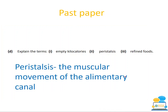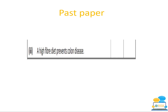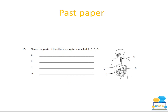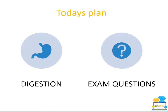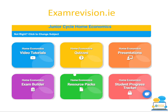More past paper examples: define peristalsis — the muscular movement of the alimentary canal. True or false: high fiber prevents colon disease — true. From an older junior cert paper, a labeling question shows: B is the stomach, C is the small intestine, D is the liver. In the 2022 exam digestion came up as a short question, but there's nothing to say it can't appear again as part of a longer question.